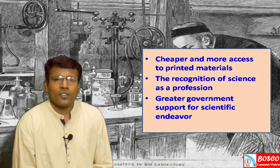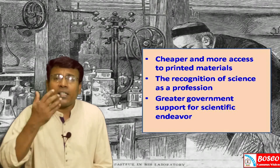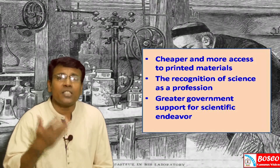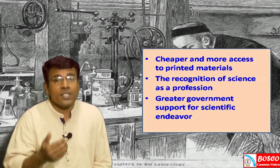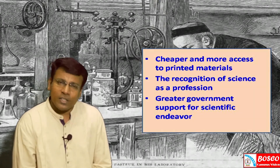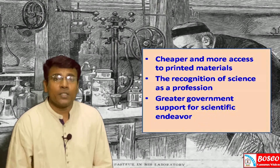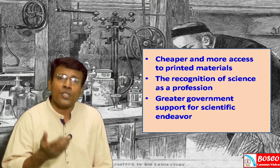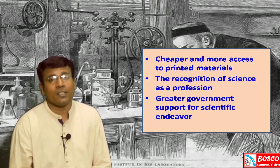The second factor that helped in the rapid growth of science and technology was the recognition of science as a profession. Science was recognized as a profession, and many people got involved in scientific research and inventions. The third factor was greater government support for scientific endeavors, as the government began to support all kinds of scientific activities.